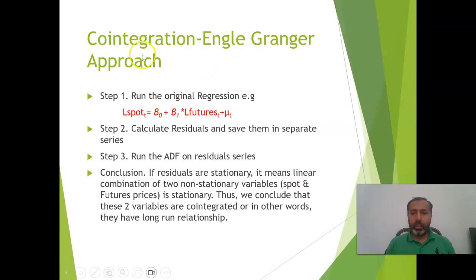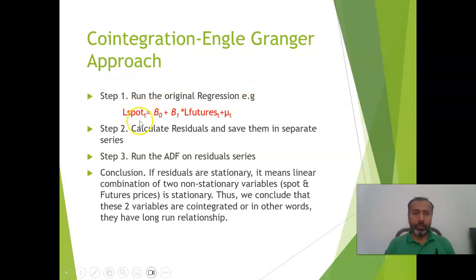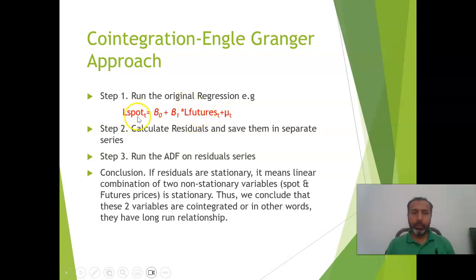Co-integration can be checked using either the Engle-Granger approach or the Johansen approach. The Engle-Granger approach is very easy and simple to use. In step one, we run the original regression — for example, log of spot prices is the dependent variable, equal to beta-naught (intercept) plus beta-1 times log of future prices. The dependent variable is spot prices and the independent variable is future prices, with L denoting log.